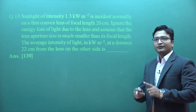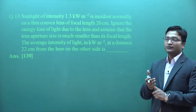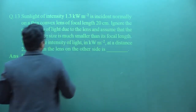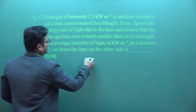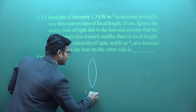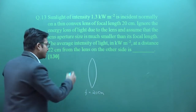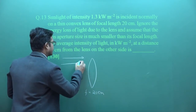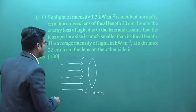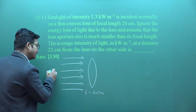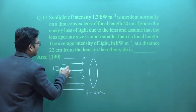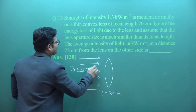Hello students, we are going to discuss question number 13 in paper 1, section 2. The question involves a convex lens with a focal length of 20 centimeters. Sunlight is falling on the whole lens, and the intensity of the sunlight is 1.3 kilowatt per meter square.